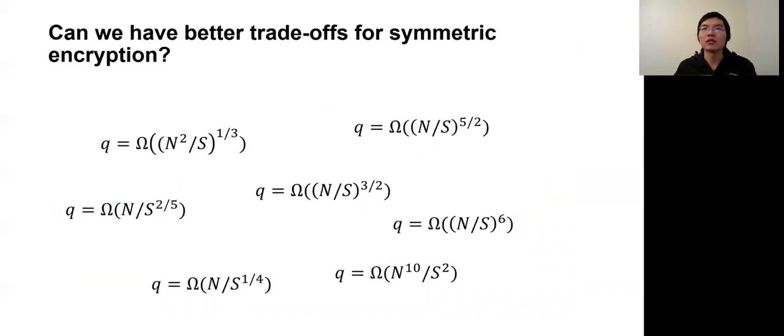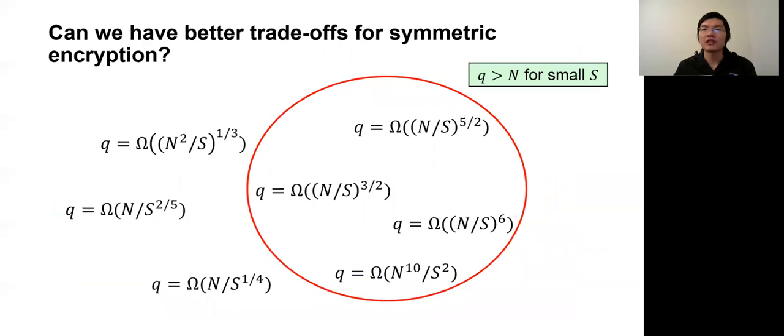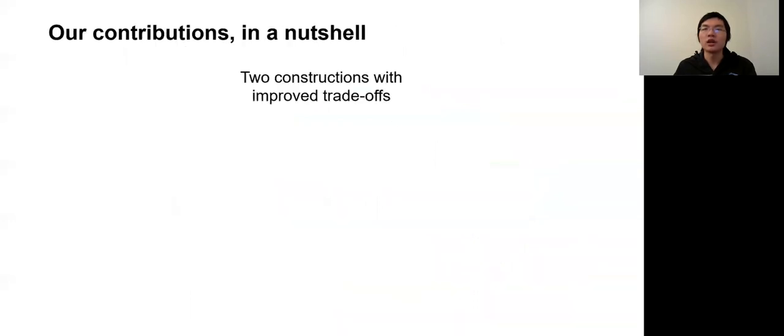Of course, this is about one specific construction. The question we ask in this work is what is the highest security one can construct to achieve in terms of the number of messages that can securely be encrypted in a bounded memory setting. Even further, can we obtain a trade-off that allows Q to be larger than big N for small memory? Note that Q larger than big N is impossible to achieve via standard techniques without bounded memory. This is interesting because it would allow us to reduce the domain size of the underlying PRF while still securely encrypting a large number of messages.